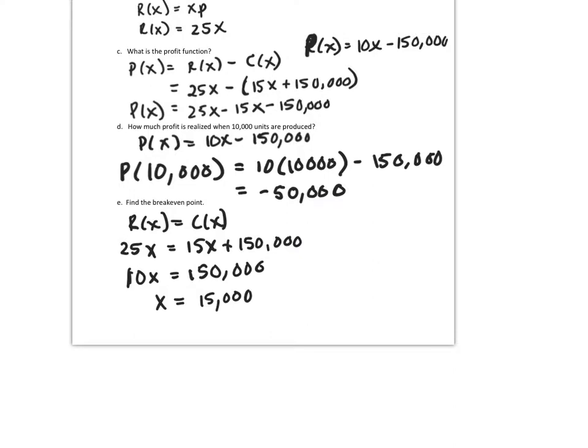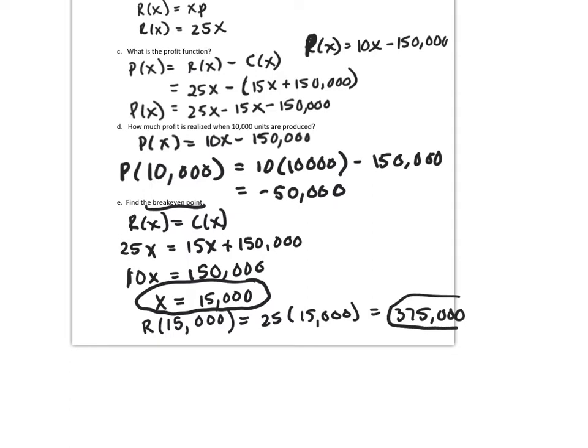If I want to figure out what the revenue is at that point, it would be R of $15,000. I could plug it in the cost as well. It doesn't matter. It's just easier. 25 times $15,000, which is $375,000. It said find the break-even point. So that's why I found the X and the corresponding Y, which happens to be total revenue at 15,000 units.